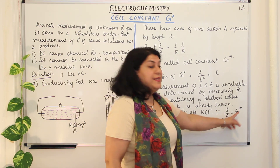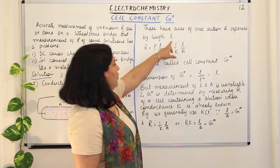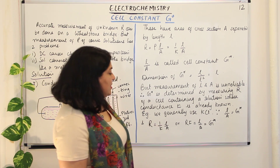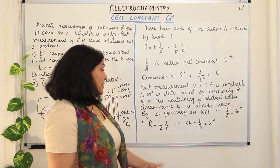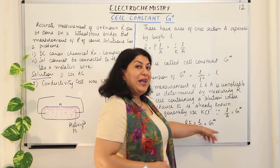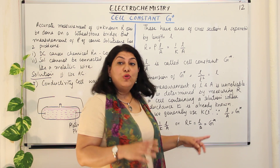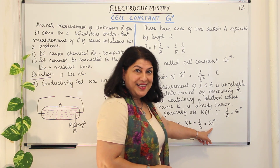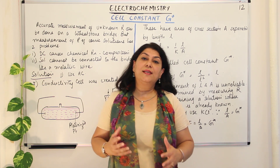Since l/A equals G* and resistance equals (1/κ) × (l/A), we can rearrange to get R × κ = l/A = G*. So G* equals resistance times conductivity. You find out the resistance of a solution whose conductivity is already known using the conductivity cell, and knowing both values you can calculate G* — the cell constant for that cell. That is how you measure and calculate the cell constant.